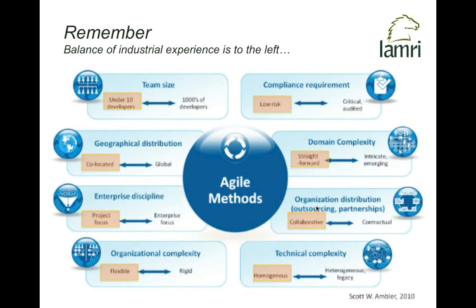This chart takes many different dimensions of applying agile methods — from technical complexity, to enterprise discipline, to domain complexity — each on a continuum from left to right. Geographical distribution goes from co-located on the left to global on the right; organizational distribution goes from collaborative to contractual. By and large, most industrial experience of agile is on the left of this chart. As your situation moves to the right — bigger distribution, bigger team sizes — there are challenges, and you've got to think about how to adapt agile to that context, or adapt the context to work better with agile.